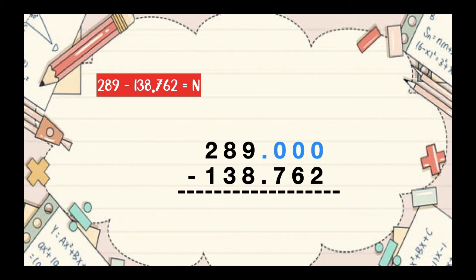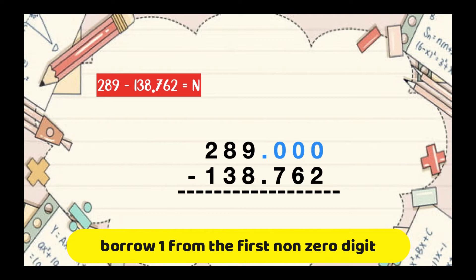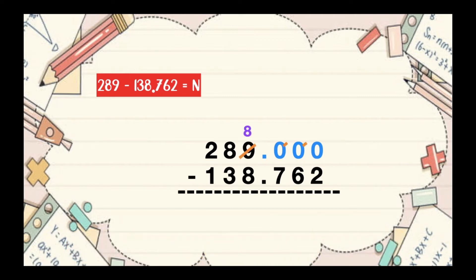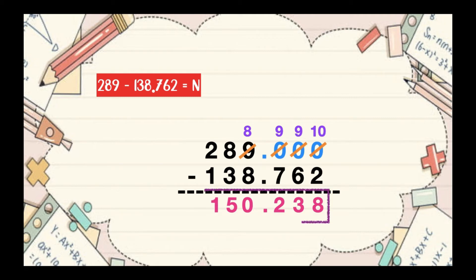Since 0 minus 2 cannot be, we're going to borrow 1 from the first non-zero digit, which is digit 9 at the 1's place. 9 will become 8. Then the middle zeros will become 9, and the first zero from the right will become 10. 10 minus 2 is 8. 9 minus 6 is 3. 9 minus 7 is 2. Let's copy the decimal point. 8 minus 8 is 0. 8 minus 3 is 5. 2 minus 1 is equal to 1. So the difference is 150.238.